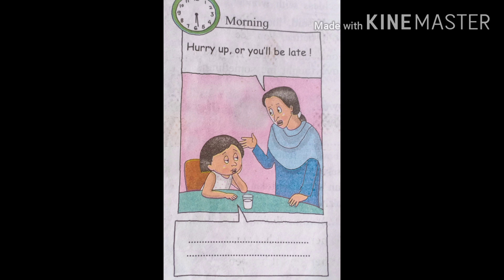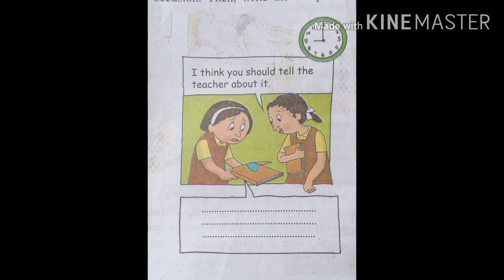Now I will show you the next picture. In the second picture, on the right hand side there is a clock showing 9 o'clock in the morning. You can see a dialogue: 'I think you should tell the teacher about it.' This statement is given by Isha's friend. In the picture, Isha is standing with a book and that book is torn. So what can you guess that Isha must have said? Isha must have said, 'See, someone has torn my book.'